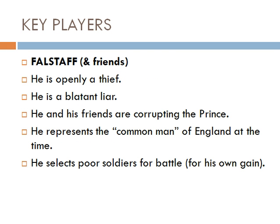Falstaff is openly a thief and a blatant liar — things that cause anarchy and can be seen as disordered. He and his friends are corrupting the prince, the heir to the royal family, and that's out of order. Falstaff represents the common man of England — an exaggerated common man, but he suggests himself that he's just like everybody else — which strongly implies that disorder is common in England at this time. He also selects poor soldiers for battle for his own personal gain, which is further disorder.